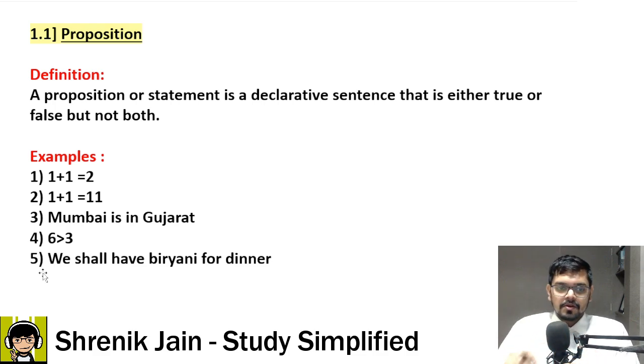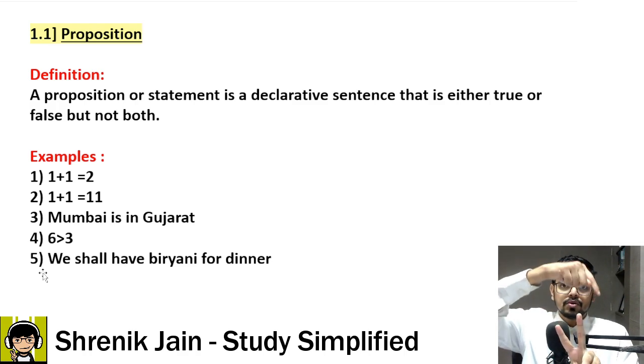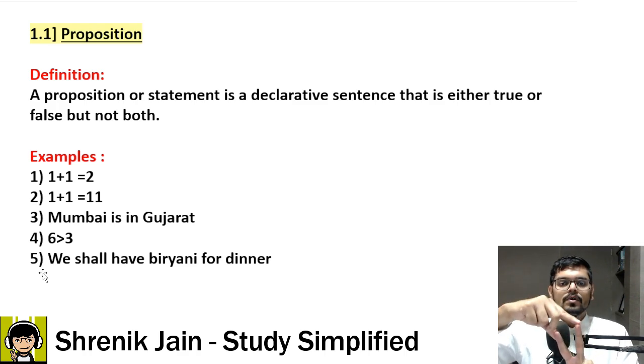Example 5 is very critical. We shall have biryani for dinner. Now you might be thinking, oh sir, this is not a proposition. It is a proposition. You have to wait for dinner time to verify whether we got biryani or we have not gotten the biryani. If we got the biryani, then true sentence. If not, then false. But true and false will not come together. Therefore, declarative sentence plus true or false. Therefore, a proposition.